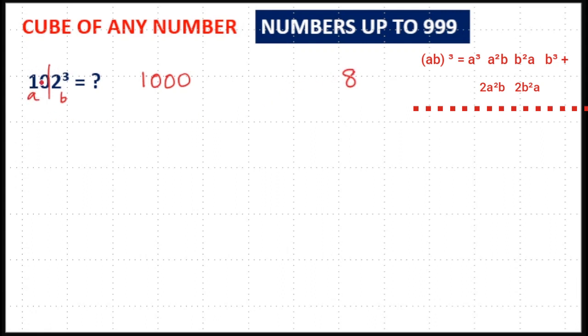Then 10 square into 2. That is 100 into 2, 200. Then 2 square into 10. That is 4 into 10, 40. Then double of 40, 80. Double of 200, 400.